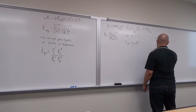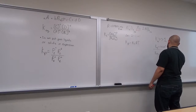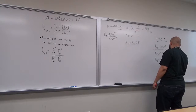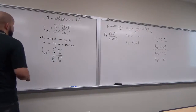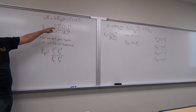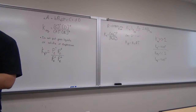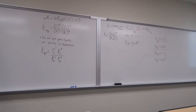If Keq is much less than 1 — say Keq = 1.0 × 10⁻⁴ — then the denominator is much bigger than the numerator. So if I gave you a Keq of 7.9 × 10⁻⁷, you would have to be able to tell me what predominates at equilibrium.